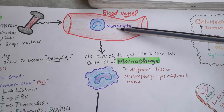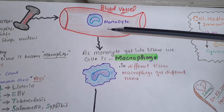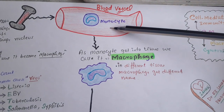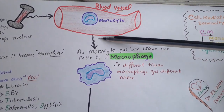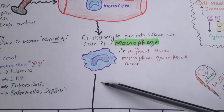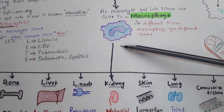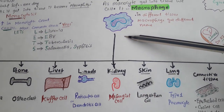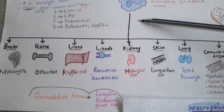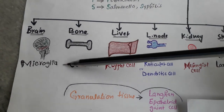Monocytes are like baby macrophages. During infection or inflammation, as the monocyte gets into the tissue, we call it a macrophage. In different tissues, the macrophage will get different names.